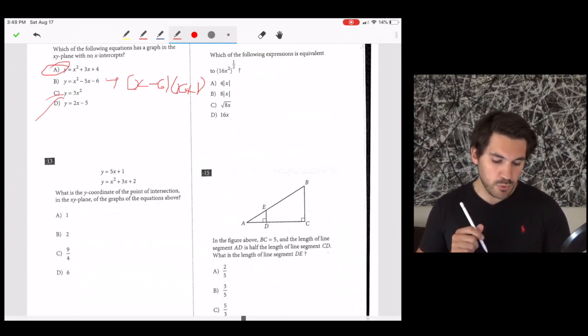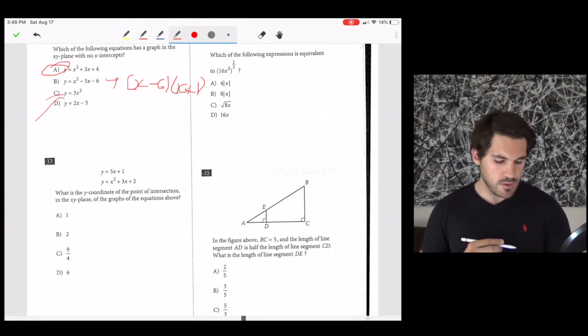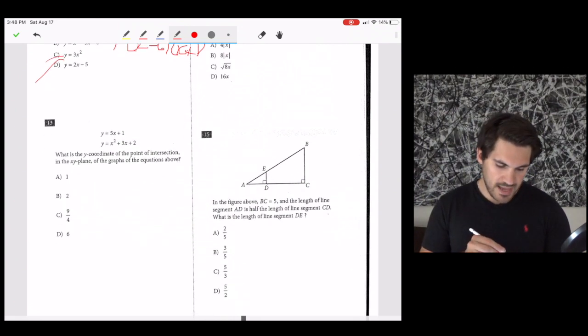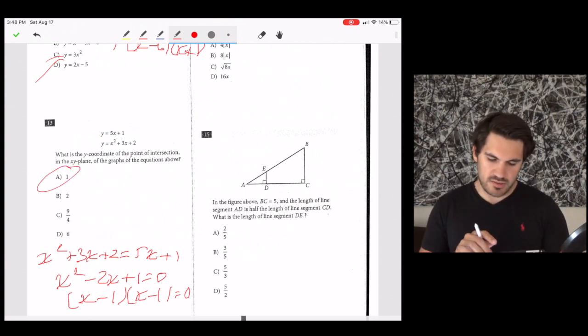13, what is the y-coordinate of the point of intersection in the graphs of the equations above? Point of intersection is where they cross. So we need to set these equal to each other. If we set them equal to each other, x squared plus 3x plus 2 equals 5x plus 1. Get it all together. x squared minus 2x plus 1 equals 0. Factor this. x minus 1 times x minus 1 equals 0, which means 1 is the solution.